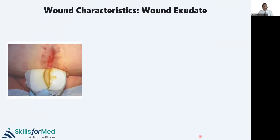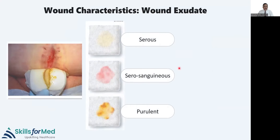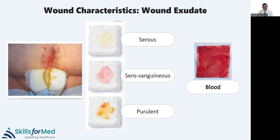The next wound characteristic is wound discharge or exudate. Serous discharge is not very bad; serosanguinous is when mixed with blood; purulent is when you should start worrying and intervening; and sometimes there can be blood in the dressing. Some wounds are dry — for example diabetic foot wounds — some have low exudate, and some have very high exudate. Your choice of dressing will depend on the amount of exudate coming from the wound.